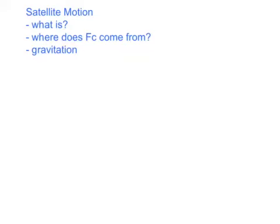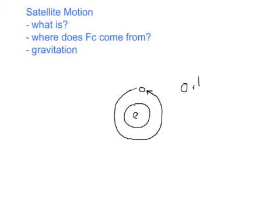In this video we're looking at satellite motion, or more properly orbital motion. We have, for example, a planet like the earth and we have something like a satellite that is following a relatively circular path around the outside. So we would say it's an orbit, and it could be a natural or man-made satellite.